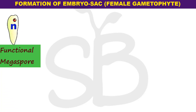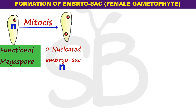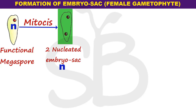The functional megaspore undergoes the first mitotic division. The mitotic division is an equational division — it does not change the ploidy. The functional megaspore nucleus divides to form 2 nuclei.